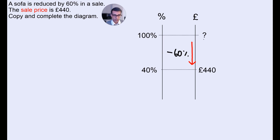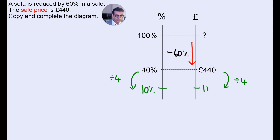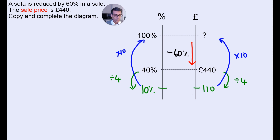From there we can work out the original price. So if 40% is £440, we can work out 10% by dividing by 4. You don't always have to show those division arrows — I'm doing them because I'm explaining it. So 440 divided by 4 is going to give you 110. And then we're going to multiply by 10 to get to 100%. So 110 times 10 is £1,100.